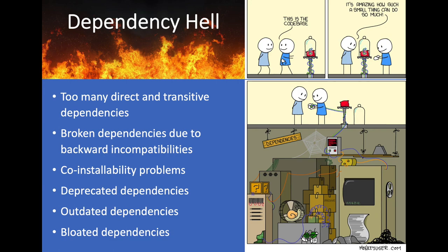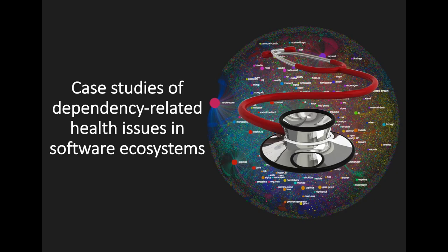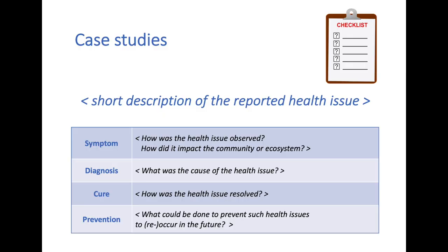In practice, in all of the ecosystems we have been analyzing, many packages have lots of direct and even more transitive dependencies to other packages. These dependencies can sometimes be broken because of backward incompatible updates, instability problems, or deprecated, outdated, or bloated dependent packages. Let me point to a number of well-known case studies of dependency-related health issues that have received quite a lot of coverage in the news.